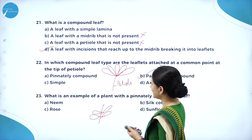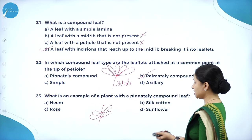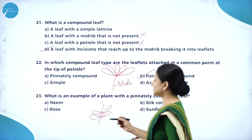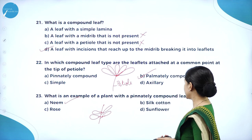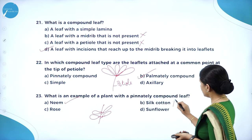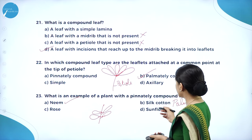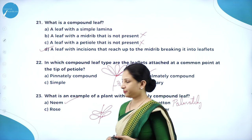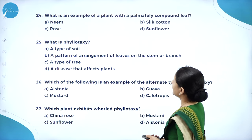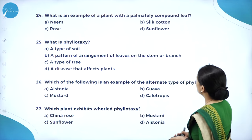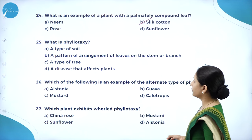What is an example of a plant with a pinnately compound leaf? It is neem. Silk cotton is an example of palmately compound leaf. Sunflower and rose have simple leaves. What is an example of a plant with a palmately compound leaf? It is silk cotton.